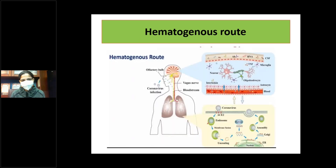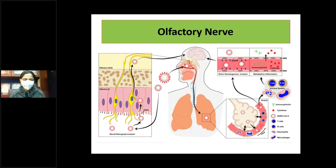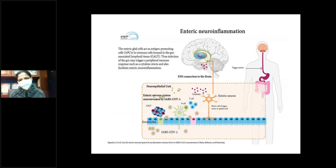The hematogenous route is one pathway shown in the slides. The olfactory nerve appears to be involved, with subsequent brain involvement via anterograde spread. The enteric nervous system is also implicated — antigen-presenting cells can carry inflammation to the gut-associated lymphoid tissue, potentially involving the GI nervous system as well.